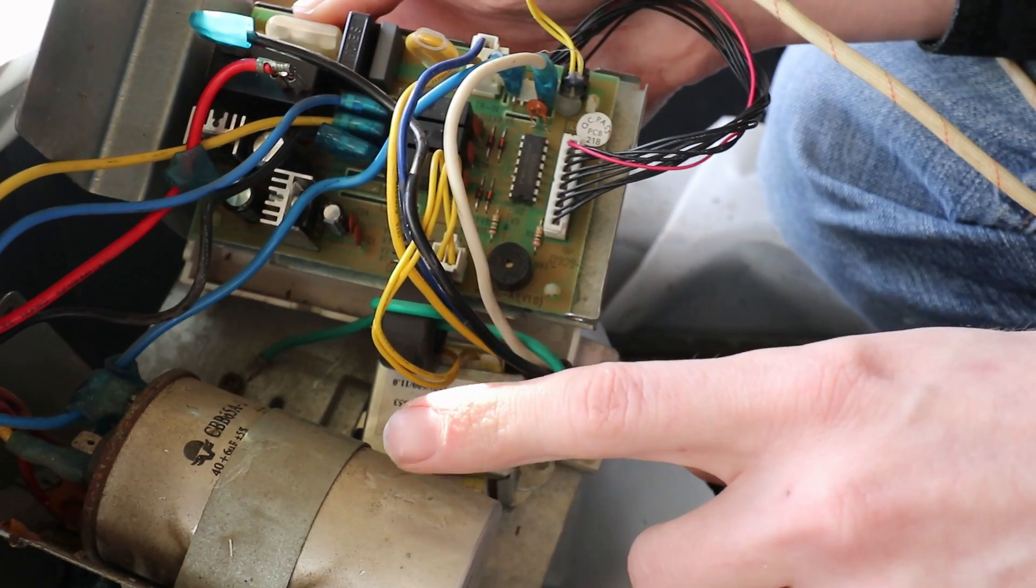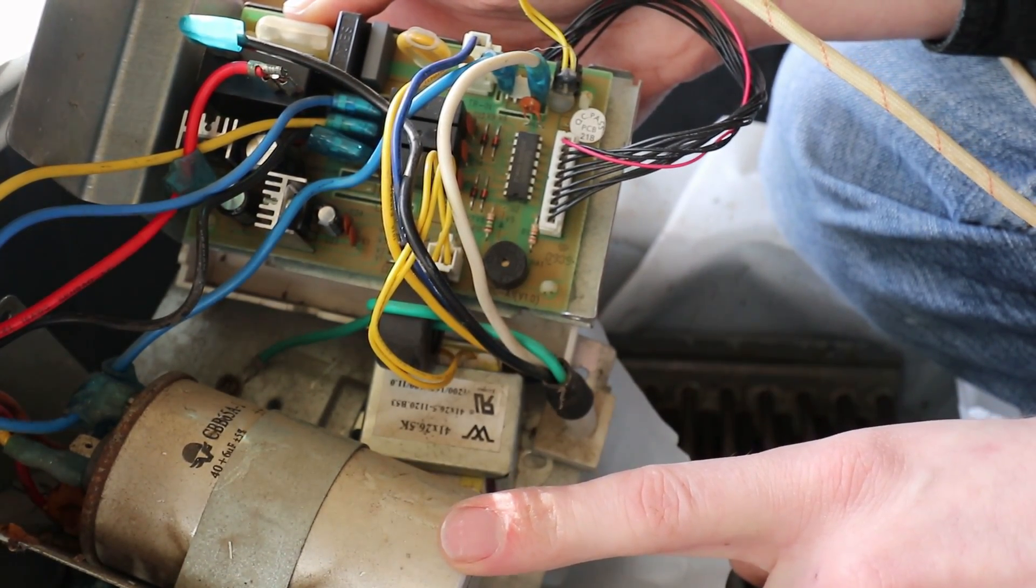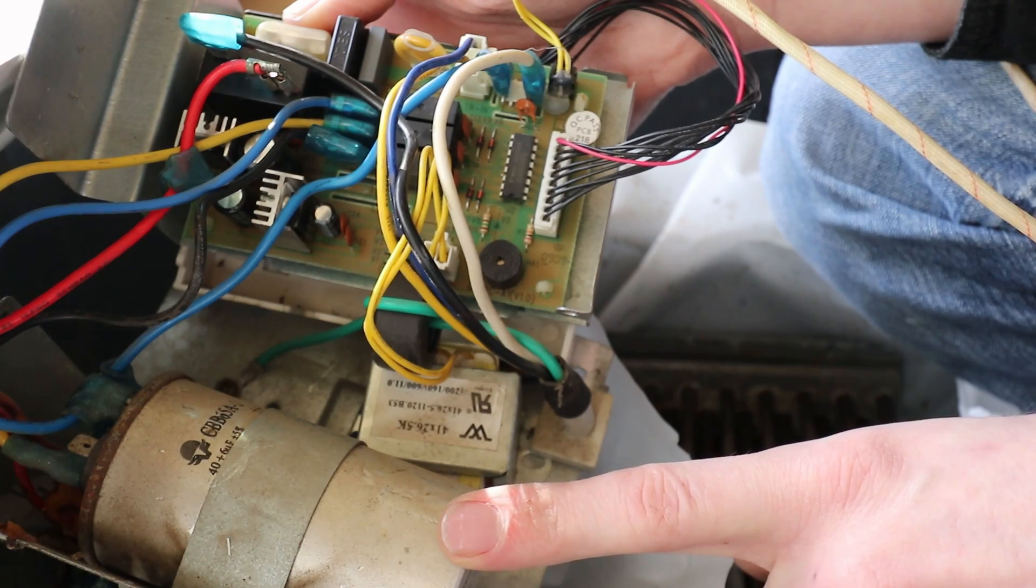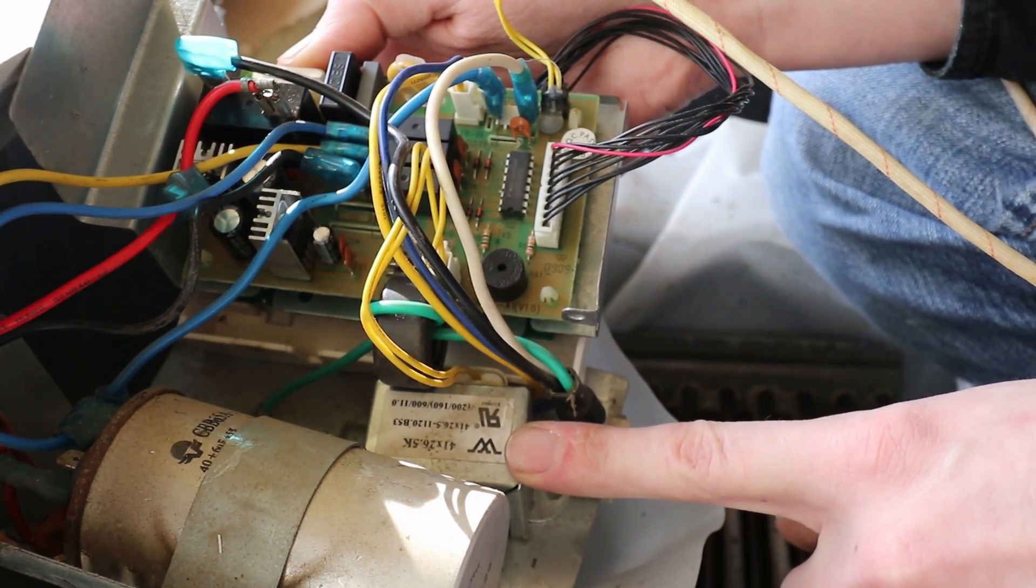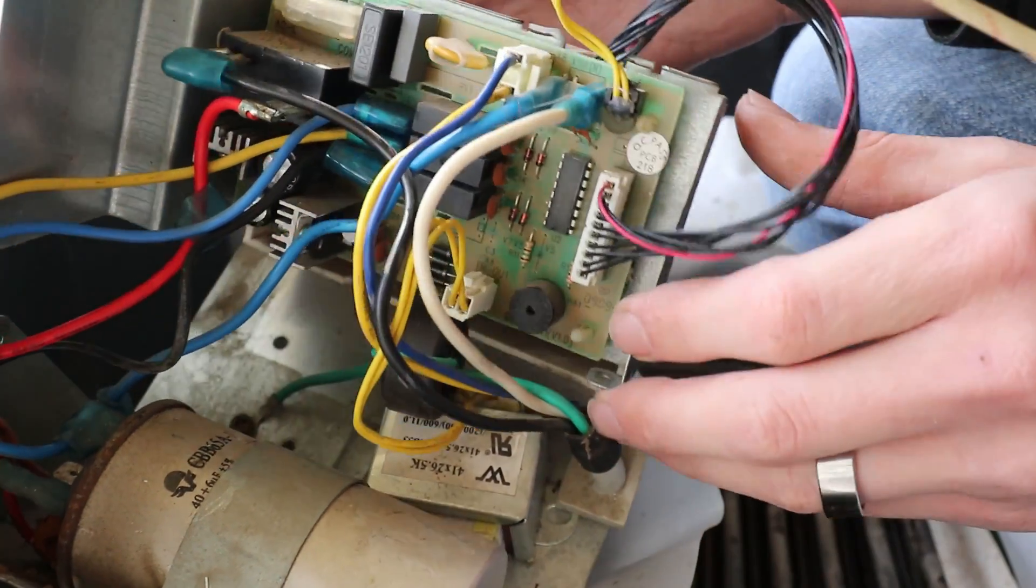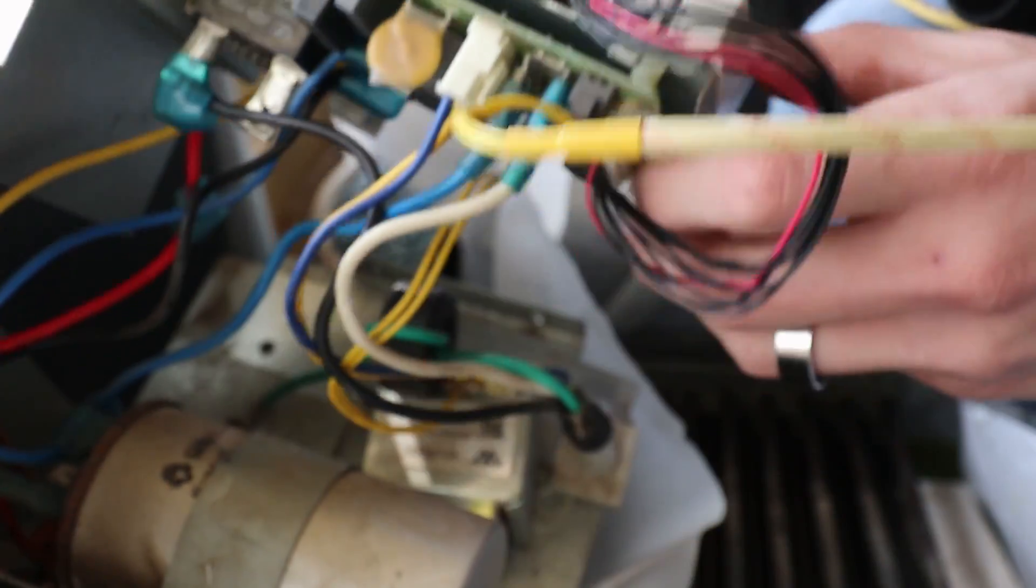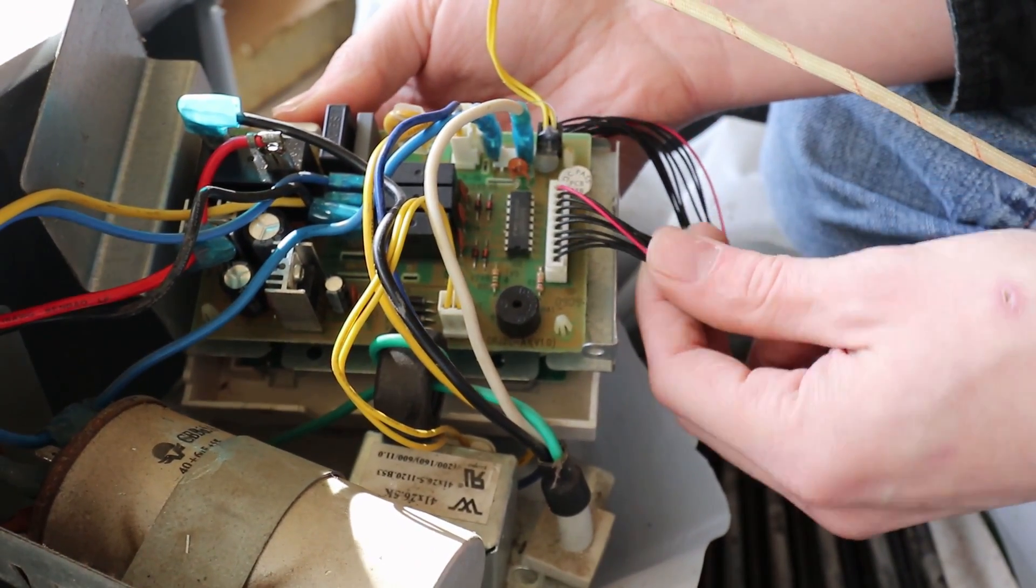Some of the basic components for this: you've got the capacitor here. The fan and the compressor run through this capacitor. You got a little transformer down here. It looks like all this transformer does is drop the voltage in order for the control panel to work. You got wires here for the control panel.